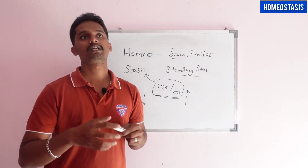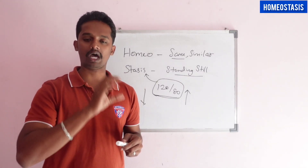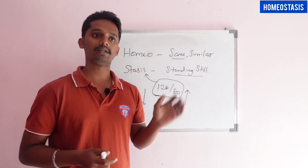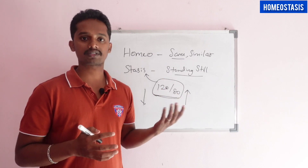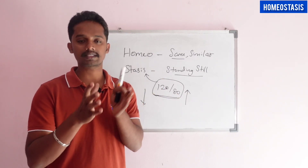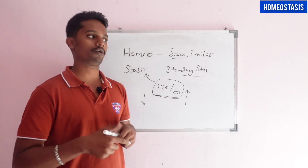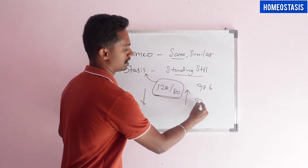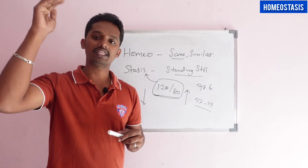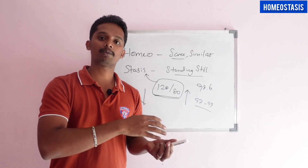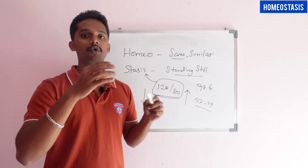In other words, homeostasis is the process of keeping our body in the same or similar internal and external environment. For example, the temperature of our body is 98.6°F on average. This is a medium range. In this range, our body will try to stay. If it is too low or too high, it will return to normal. That is how our body maintains its internal and external environment.